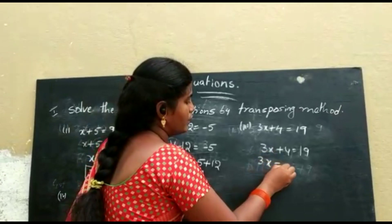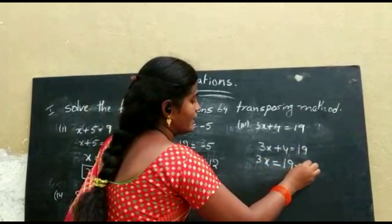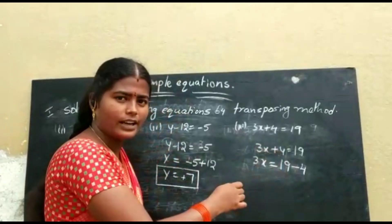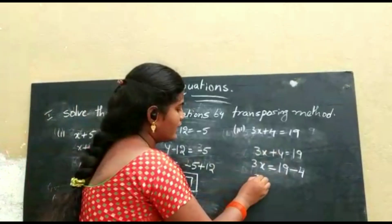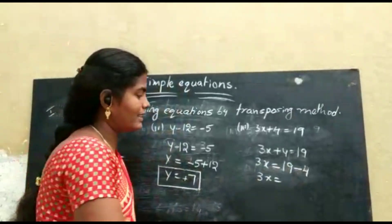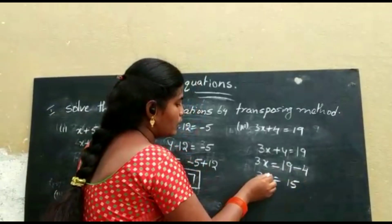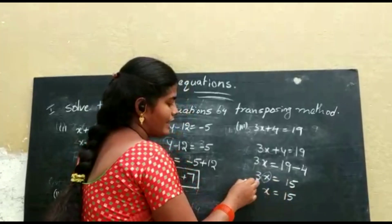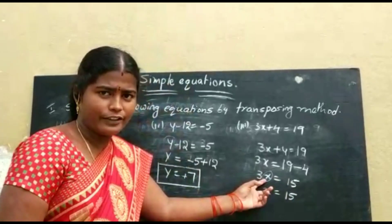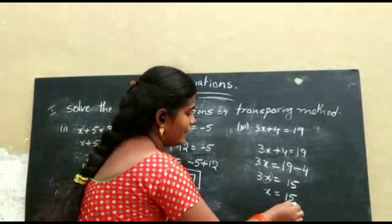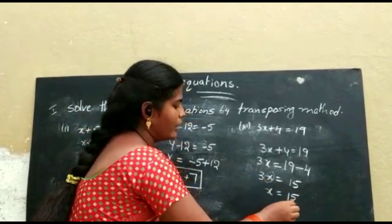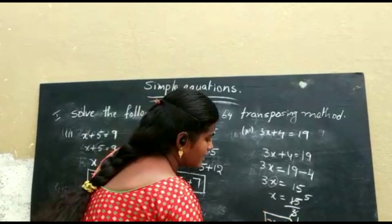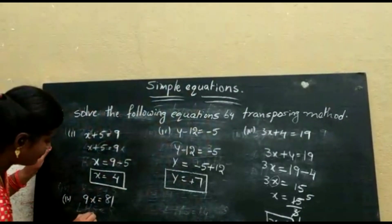Next equation: 3x plus 4 is equal to 19. Transposing plus 4 to the RHS, it becomes minus 4. So 3x is equal to 19 minus 4, which is 15. Then transposing 3 to the RHS as division, x is equal to 15 divided by 3.